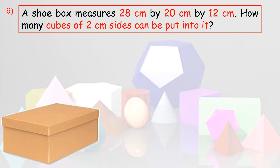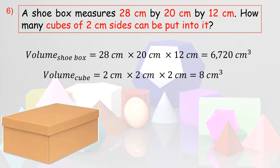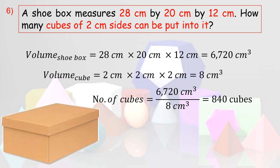A shoe box measures 28 cm by 20 cm by 12 cm. How many cubes of 2 cm sides can be put into it? First, find the volume of the shoe box: 28 times 20 times 12 equals 6,720 cubic centimeters. Then find the volume of one cube: 2³ equals 8 cubic centimeters. Finally, divide 6,720 by 8, which equals 840. So 840 cubes can be placed in the shoe box.